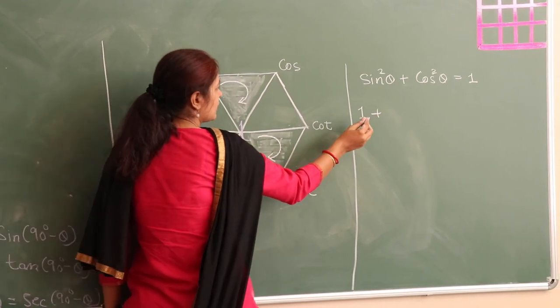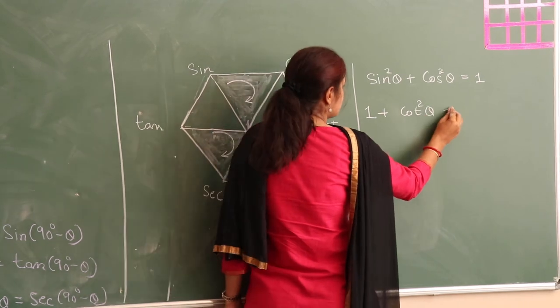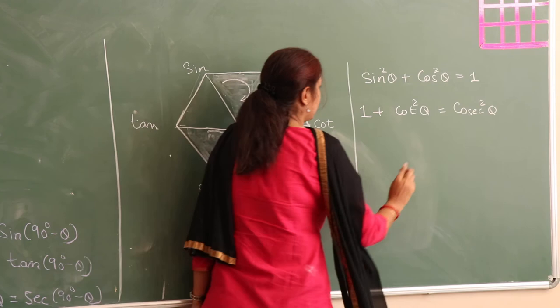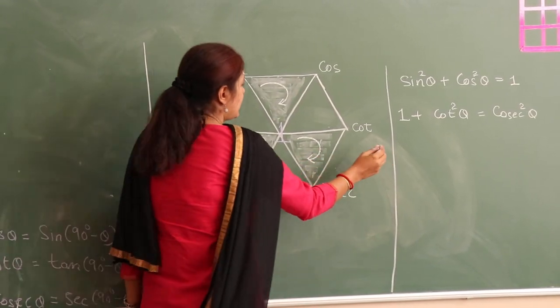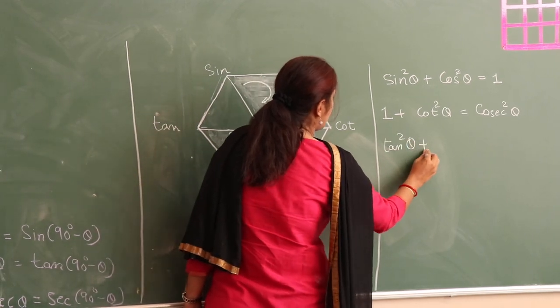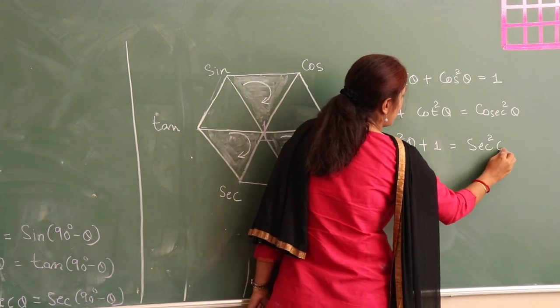Next identity is one plus tan square theta is equal to sec square theta. Again, if I take this triangle, then tan square theta plus one is equal to sec square theta.